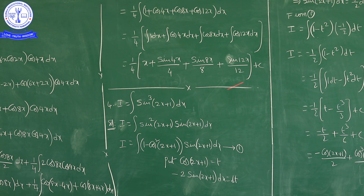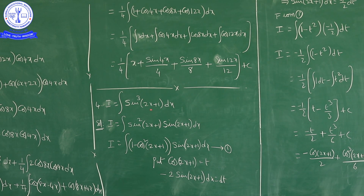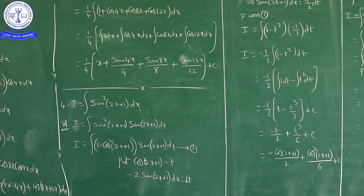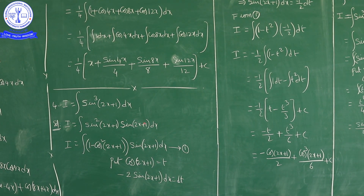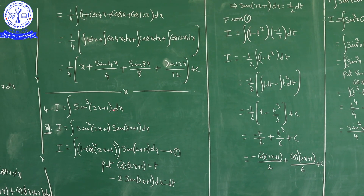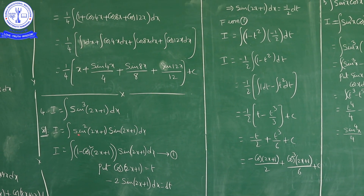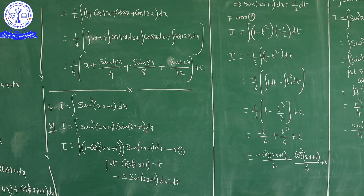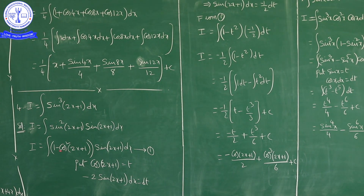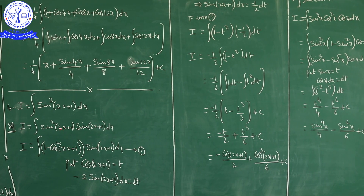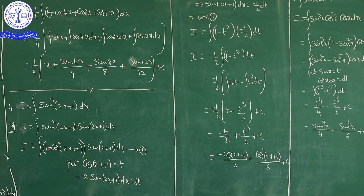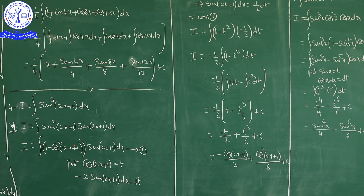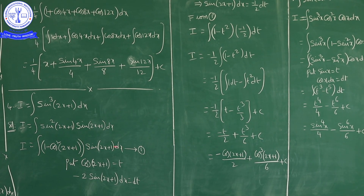Next question: integration of sin³(2x+1) dx. We write sin³ as sin² · sin. So sin³(2x+1) = sin²(2x+1) · sin(2x+1). Further, sin²(2x+1) = 1 minus cos²(2x+1). So the integral becomes ∫ [1 minus cos²(2x+1)] · sin(2x+1) dx.